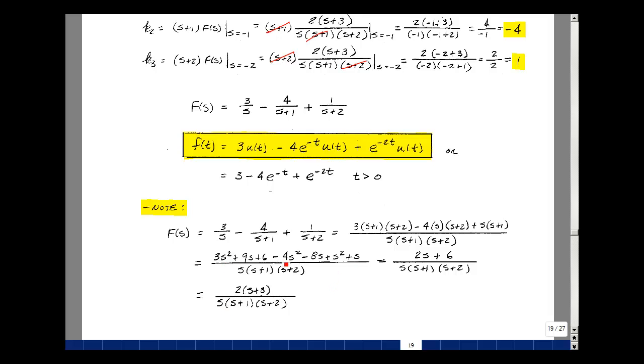Then I have 9s - 8s + s, which equals 2s. And I've got +6. Pulling out a 2, I've got 2(s+3)/[s(s+1)(s+2)]. That's the equation we started with.